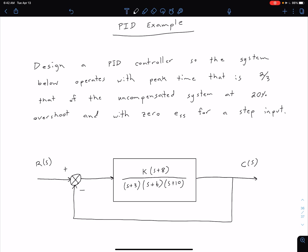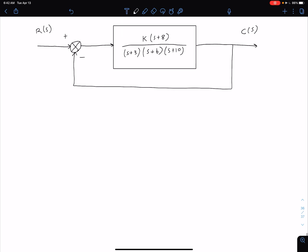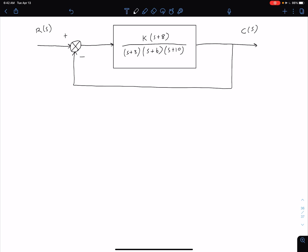We're gonna follow the basic steps that we laid out in the previous video. In this first video, we're gonna look at step one, which is going to be characterizing our uncompensated system. So step one is to characterize or evaluate our uncompensated system. We need to have some sort of starting point before we start adjusting the system.